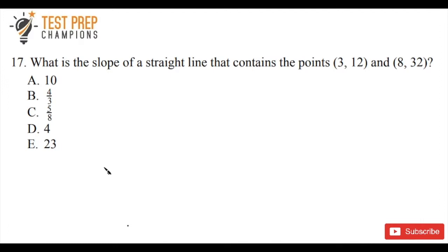So the question is: what is the slope of a straight line that contains the points (3, 12) and (8, 32)? Go ahead, try this out on your own, and then we'll go over it.